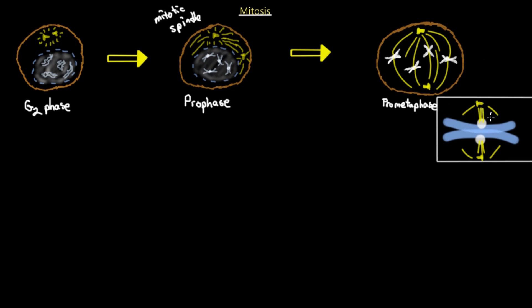Each sister chromatid has a kinetochore, and the microtubules connect to each kinetochore, pulling them apart and lining them up in separate directions — because the cell is going to separate and will have an equal number of chromosomes. The microtubules connect to these kinetochore structures. Note that the actual pulling apart does not occur yet in pro metaphase; what happens is the microtubules attach to the kinetochores.